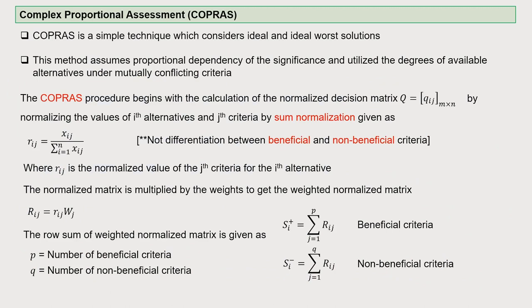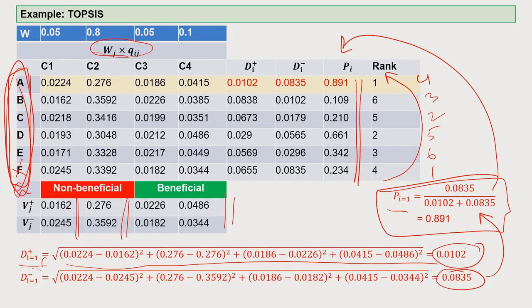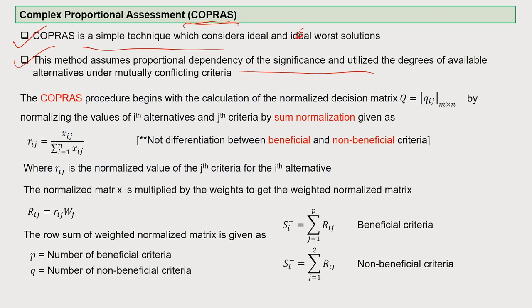Another MCDM method which can be used is COPRAS, which stands for Complex Proportional Assessment. COPRAS is a technique that considers both the ideal and the ideal worst solution simultaneously. This method assumes proportional dependency of the significance and utilizes the degrees of available alternatives under mutually conflicting criteria — where criteria C1 and C2 could be mutually contrasting or conflicting. COPRAS is suited for more complicated decision-making processes.